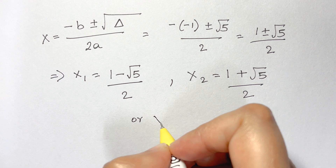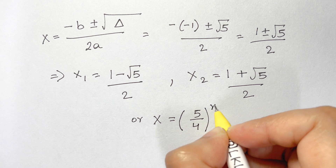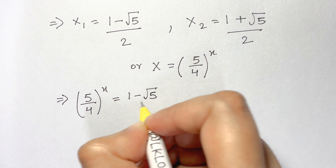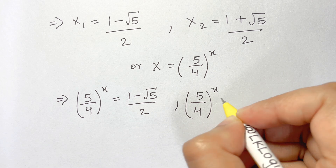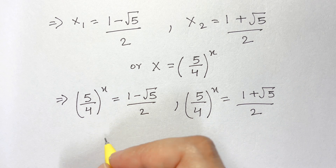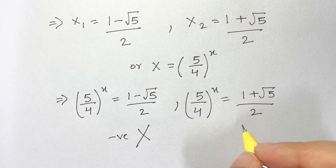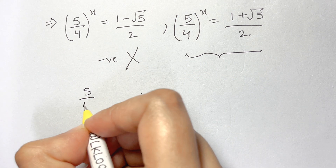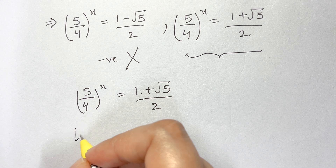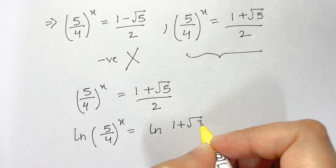From our substitution X = (5/4)^x, we consider both solutions. X₁ = (1 − √5)/2 is negative, so it cannot equal (5/4)^x which must be positive — so X₁ is rejected. We take X₂ = (1 + √5)/2, giving (5/4)^x = (1 + √5)/2. Taking the natural log of both sides: ln[(5/4)^x] = ln[(1 + √5)/2].